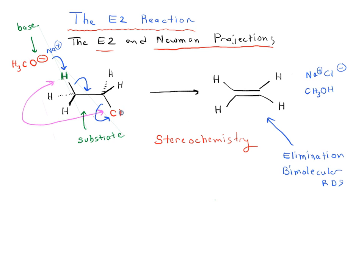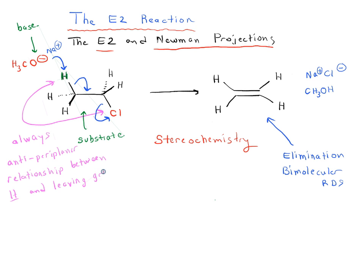They're both in the same plane, but one's pointing up and one's pointing down. The key issue for the stereochemistry of the E2 reaction is that there is always what we call an anti-periplanar relationship between the hydrogen that's removed and the leaving group. You might also hear this referred to as anti-coplanar. The dihedral angle is 180 degrees.